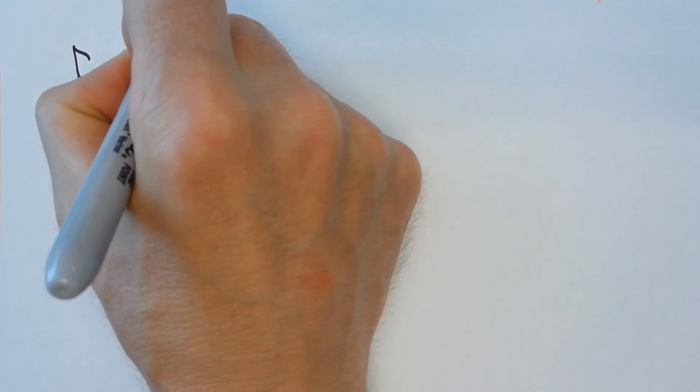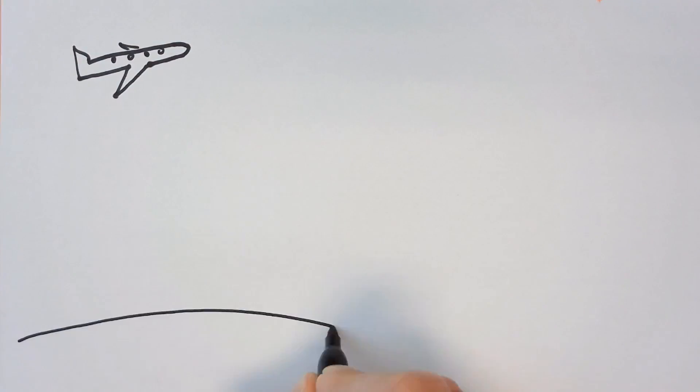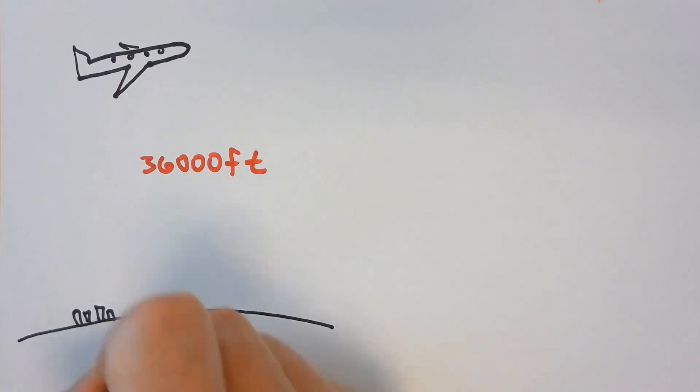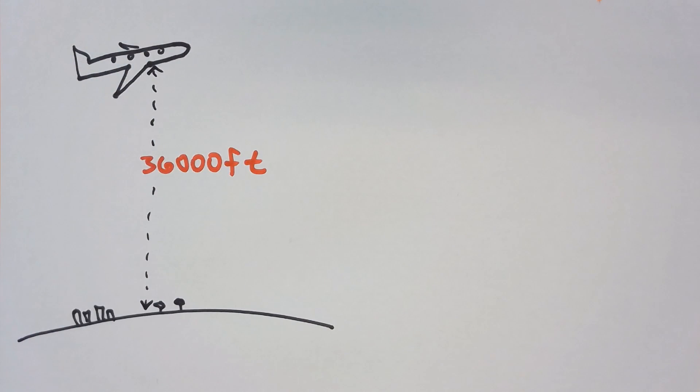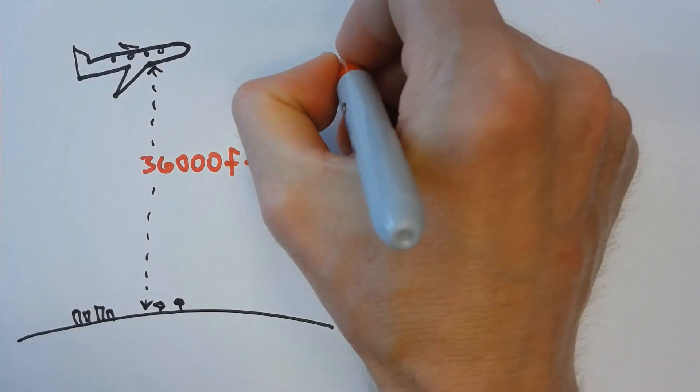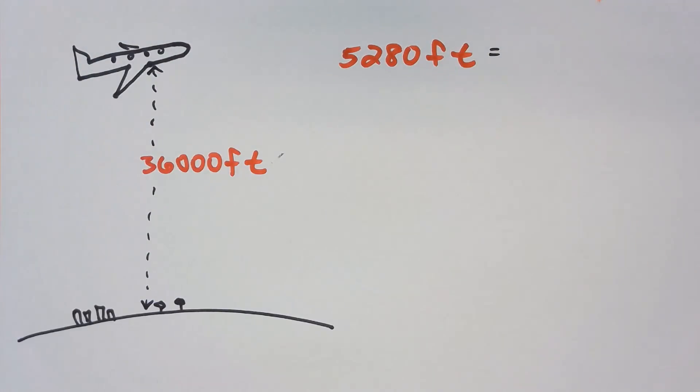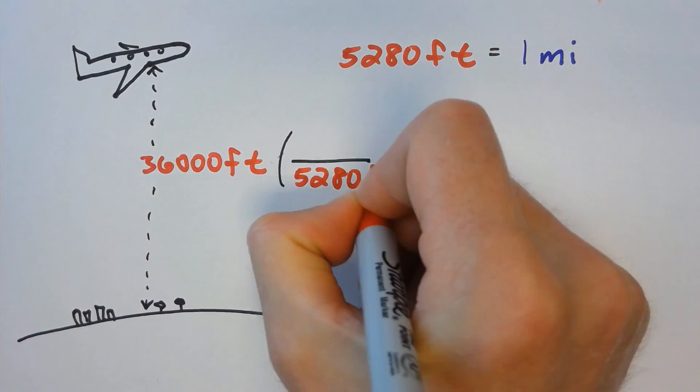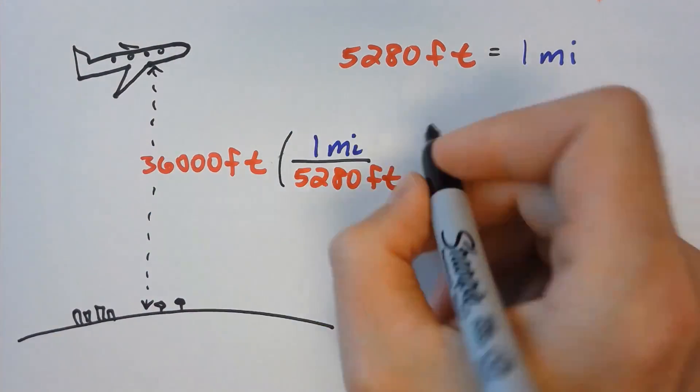One more example. Passenger jets have a cruising altitude around 36,000 feet. How many miles above sea level is this? The conversion factor between feet and miles is 5,280 feet is 1 mile. Multiplying the altitude by the resulting factor yields 6.8 miles.